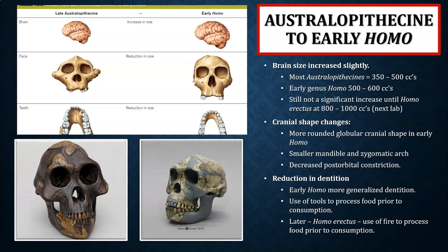This slide we're going to look at some of the changes that we see from late australopithecines into early members of genus Homo. The three main changes are: cranial capacity and brain size will increase slightly. Most australopithecines, both gracile and robust forms as well as the pre-australopithecines, have a cranial capacity between about 350 to 500 cc's, within the range of modern-day chimpanzees. Early genus Homo shows a slight increase, averaging somewhere between 500 to 600 cc's.